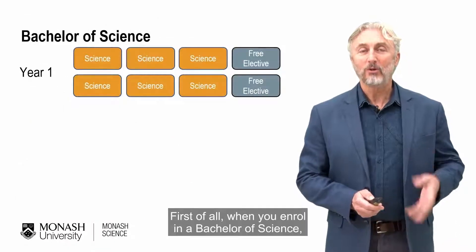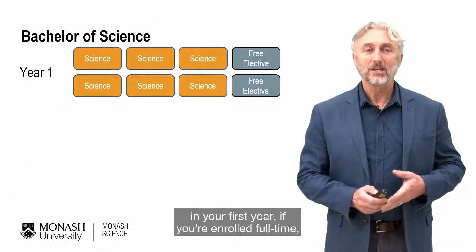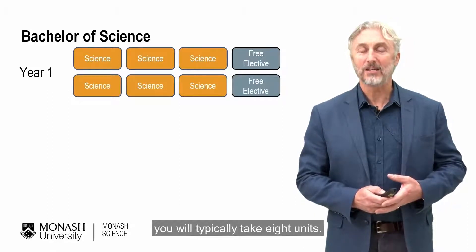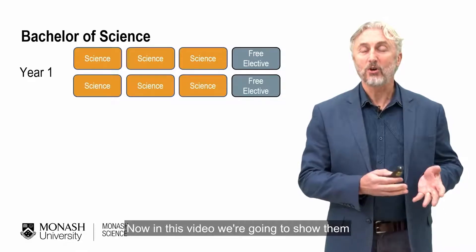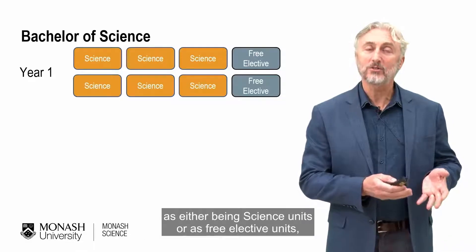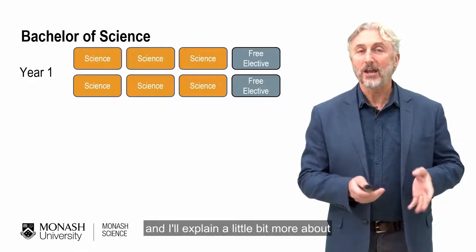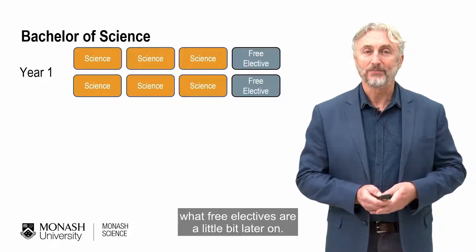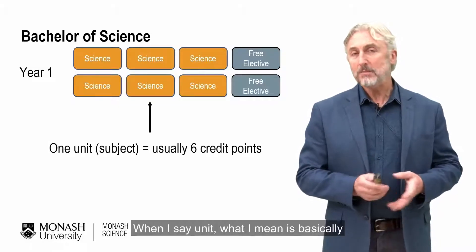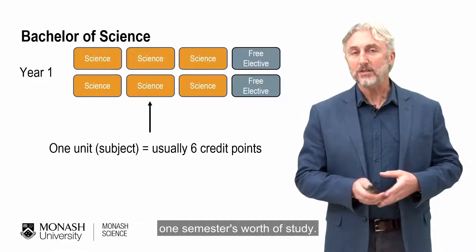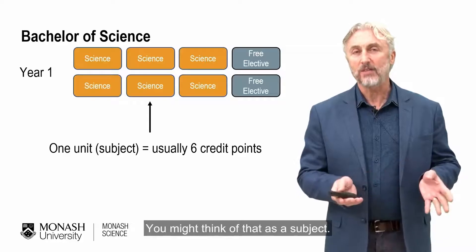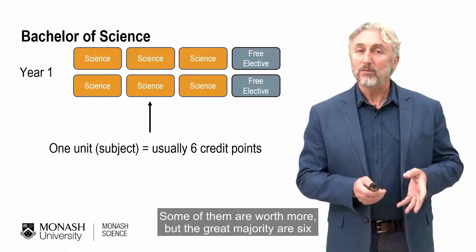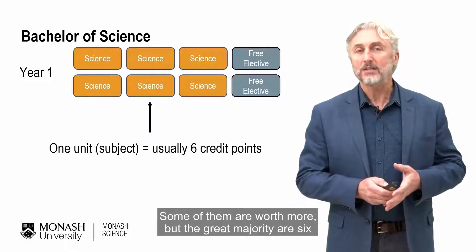When you enrol in a Bachelor of Science, in your first year, if you're enrolled full time, you'll typically take eight units. In this video, we're going to show them as either being science units or free elective units. When I say unit, I mean basically one semester's worth of study — you might think of that as a subject. Usually our units are worth six credit points; some are worth more, but the great majority are six.